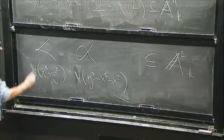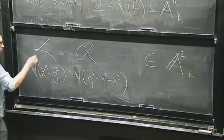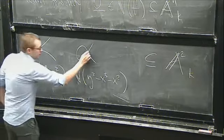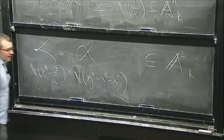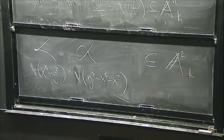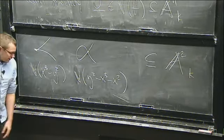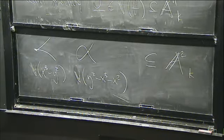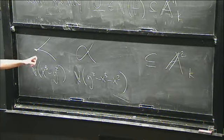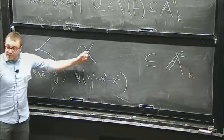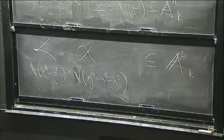The key point here is that at a general point, assuming you take your hypersurface to not have any repeated factors, at a general point it will be smooth, but at these special points they will be singular. And those are what I'm trying to study.